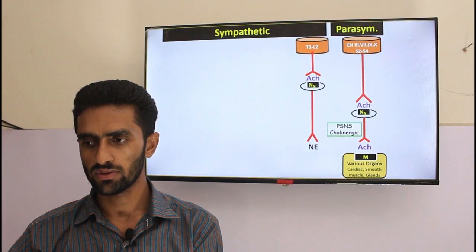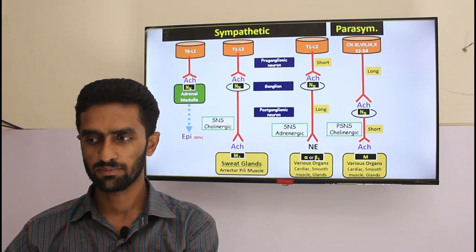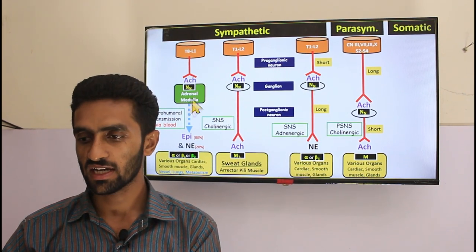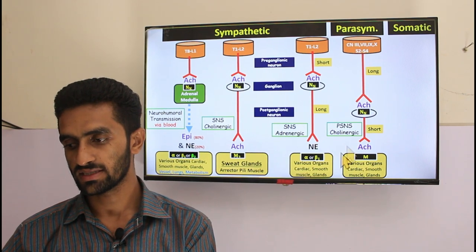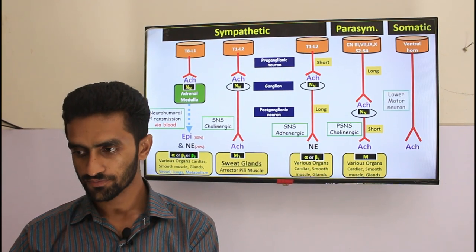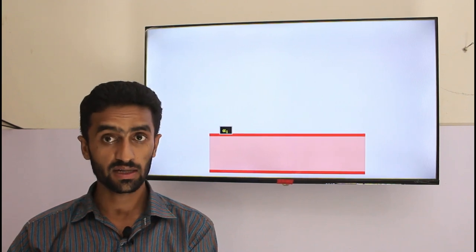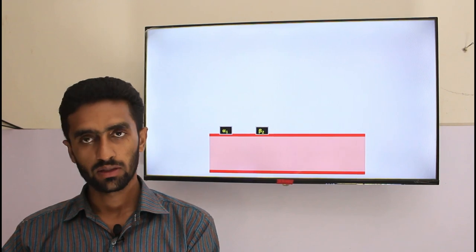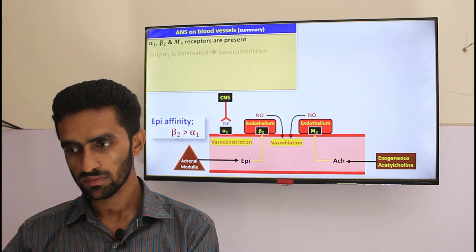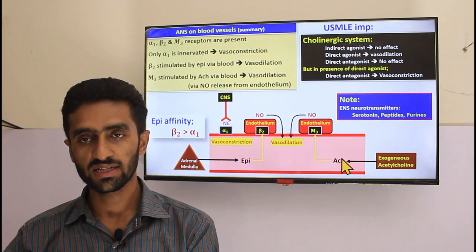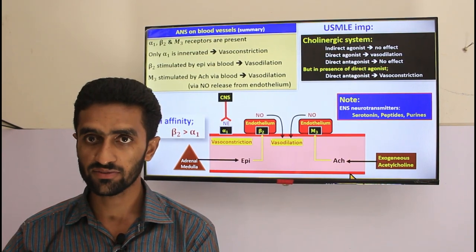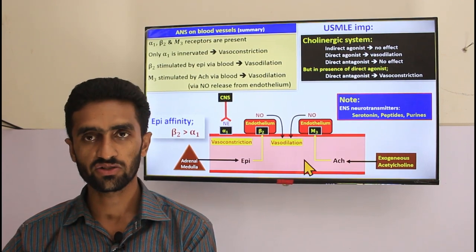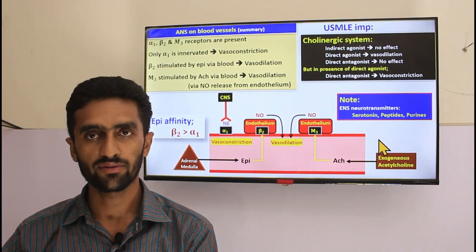Recalling the parasympathetic and sympathetic systems: the first neuron always uses acetylcholine. If you give an agonist, it can stimulate all sites where acetylcholine acts. Regarding blood vessels, exogenous acetylcholine can cause vasodilation. Direct agonists can cause vasodilation while indirect agonists have no effect.